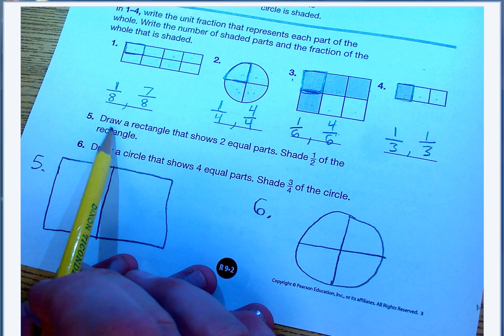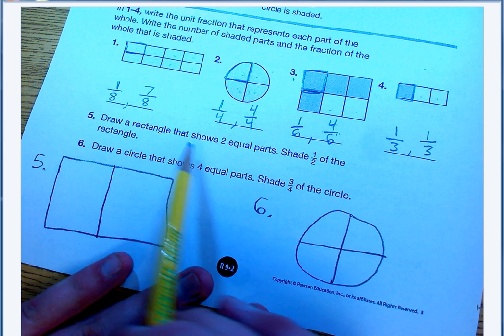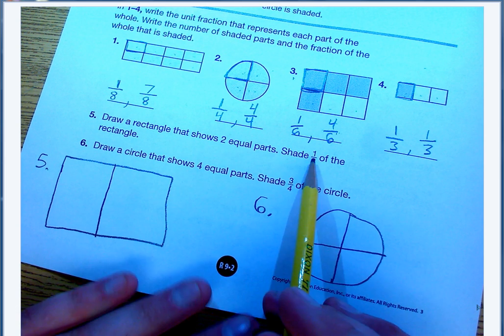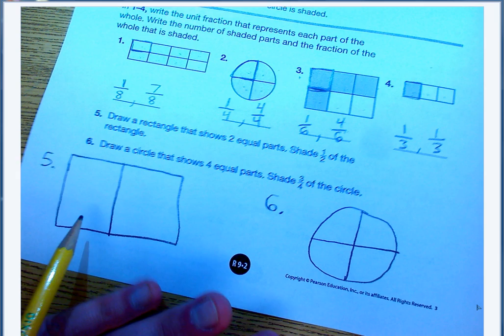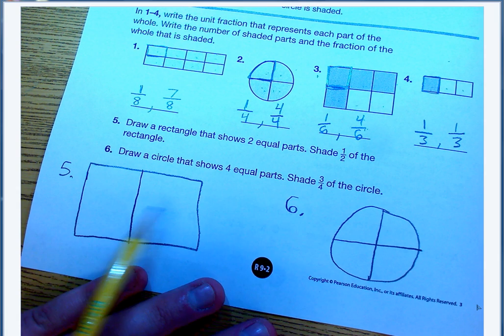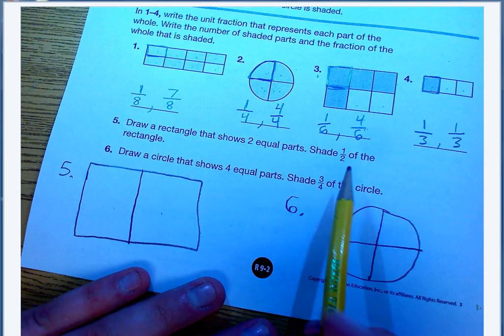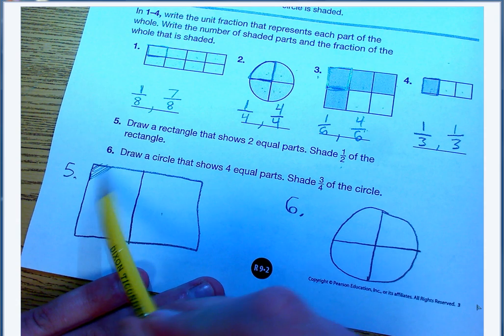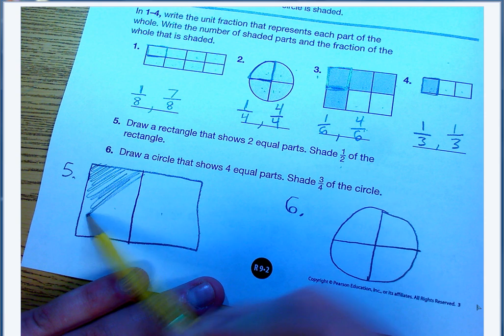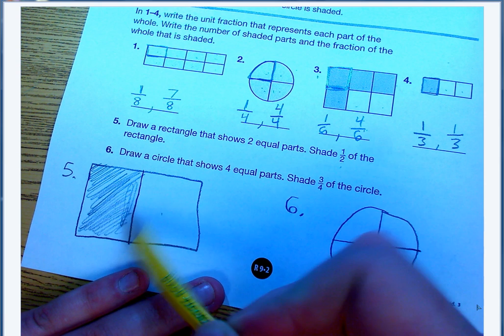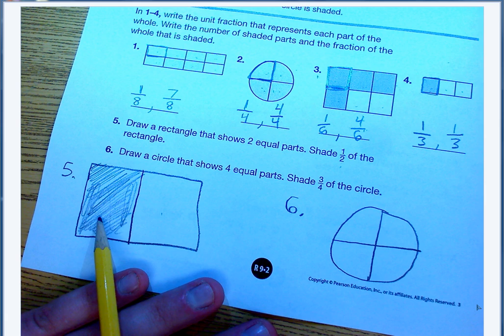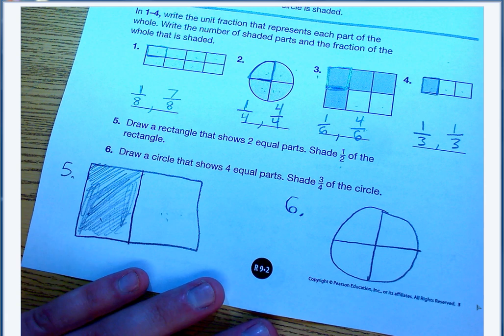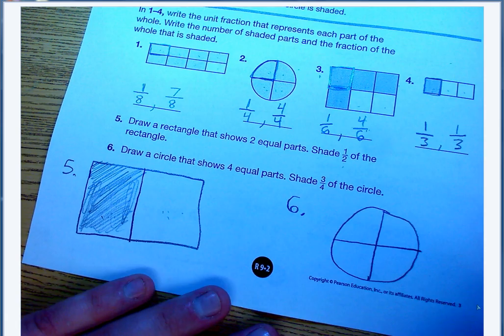Now this says draw a rectangle that shows two equal parts. Shade one-half of the rectangle. I've gone ahead and I've already drawn that rectangle with two equal parts, one, two, and I need to shade one of those two parts. So I'm going to go ahead and just shade that in real quick. Notice that I have one part out of two that's shaded, so one-half of this rectangle is shaded.